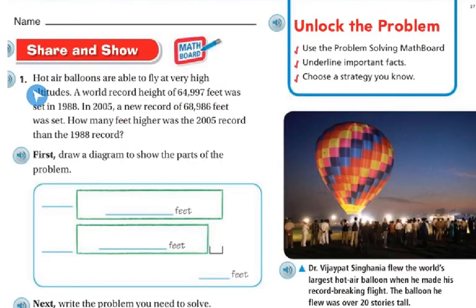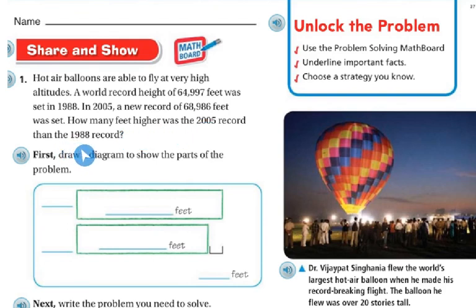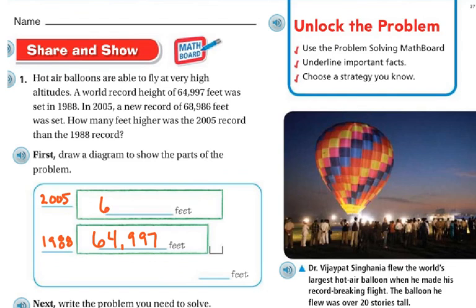Let's do the Sharon Show. Hot air balloons are able to fly at a very high altitude. A world record height of 64,997 feet was set in 1988. In 2005, a new record of 68,986 feet was set. How many feet higher was the 2005 record than the 1988 record? First we're going to draw a diagram. The higher one — the bigger one — is the one set in 2005, which is 68,986 feet. And 1988 was 64,997 feet.